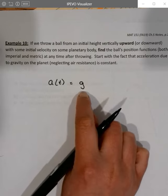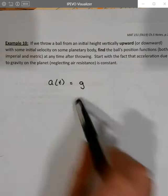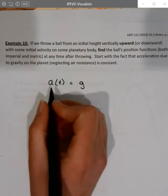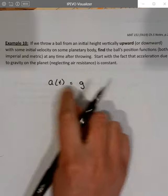It's the number for this planet - negative 32 feet per second per second or negative 9.8 meters per second squared. So if that's my gravity, that's my acceleration function.